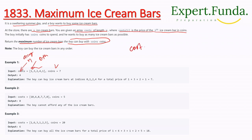In example one, the cost array is [1, 3, 2, 4, 1] and the coins are 7. The indices are 0, 1, 2, 3, 4. Let's see how many ice cream bars the boy can buy. Starting from the cheapest, he can buy the ice cream at index 0 for 1 coin.